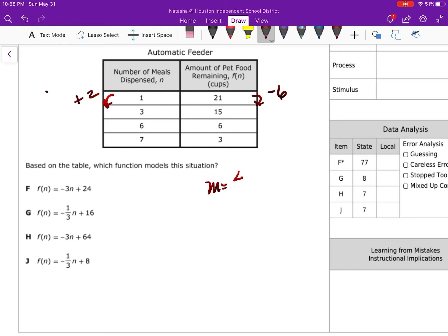Well, my slope is the change in y over the change in x, so that's negative 6 divided by 2, which is going to give me negative 3. All my answer choices are in slope intercept, so that's going to eliminate g and that's going to eliminate j because my slope is negative 3.